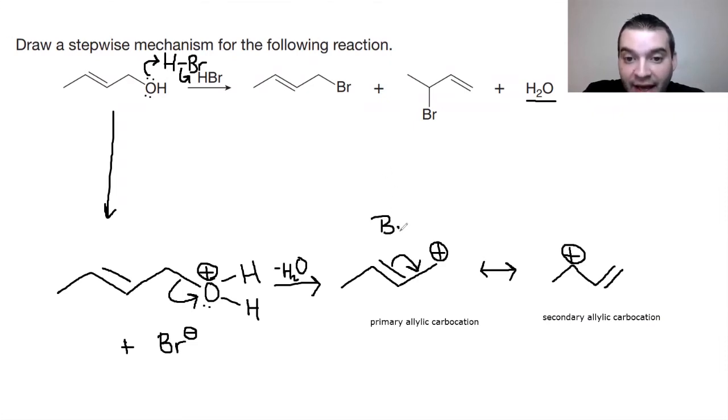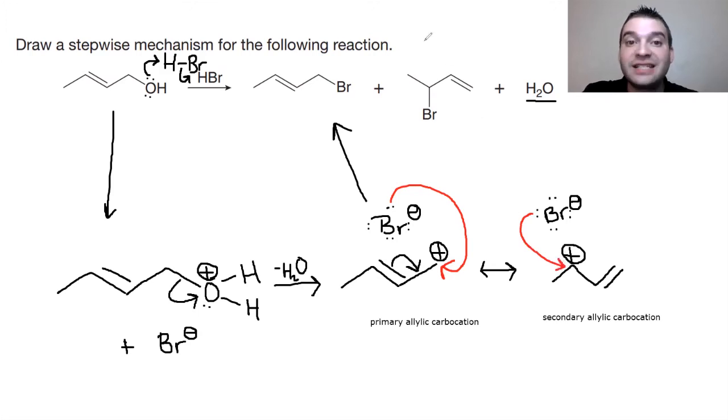So now, again, we have our bromide ion, the Br minus, that can potentially react with either of these structures. And so in the first case, I'm going to draw all of my lone pairs once again. And we see that I can now, let's use a different color here, react this bromine with the negative charge, with the positive charge on our structure. And that will lead to our first structure that we have right here, this one-bromo-but-2-ene. And then the second structure that we have, again, that Br minus, our bromide ion, is going to react with that positive charge to now generate our second product, the three-bromo-but-1-ene.